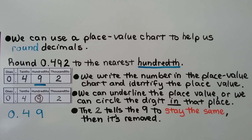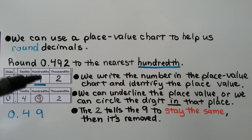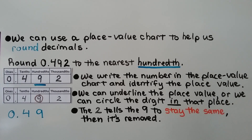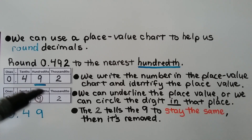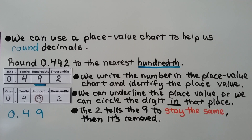We can use a place value chart to help us round decimals. We need to round 492 thousandths to the nearest hundredth. We write the number in the place value chart and identify the place value. We're rounding to the hundredths place, so we're rounding this nine. We can underline the place value or circle the digit in that place to help us identify it. The two tells the nine to stay the same, then it's removed. It rounds to 49 hundredths.